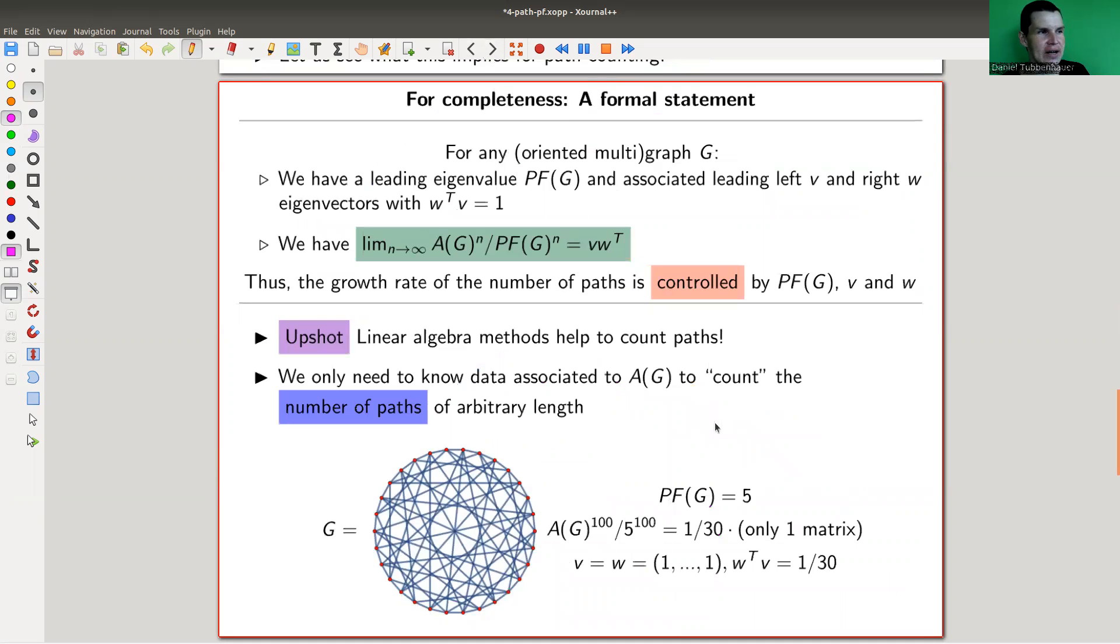And as I already sketched, the eigenvalue, the biggest one, should determine the growth rate of the matrix. And here's a precise statement. So essentially, the limit of the entries of A to the n are all of size Perron-Frobenius eigenvalue to the n, which is very simple to compute. And it's actually even better, you could say exactly how they differ. So you have those leading eigenvectors, you have a left one, you have a right one, and you just multiply them together. And that gives you the limit of this process.